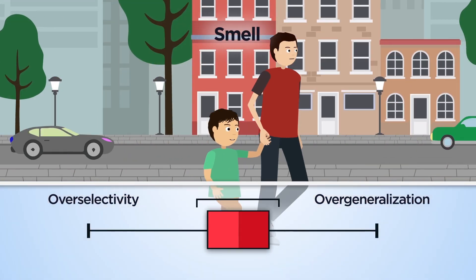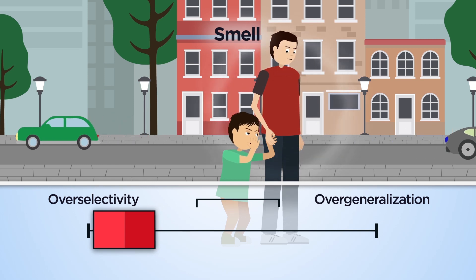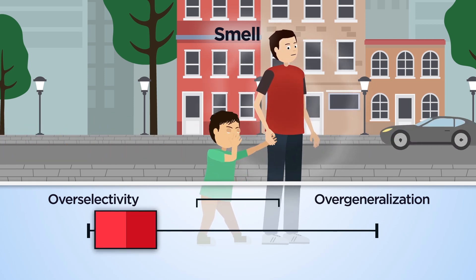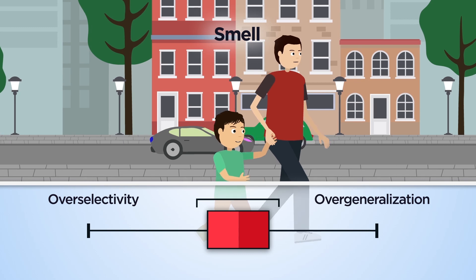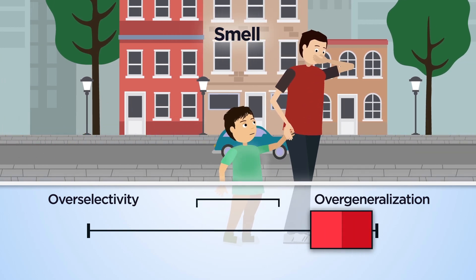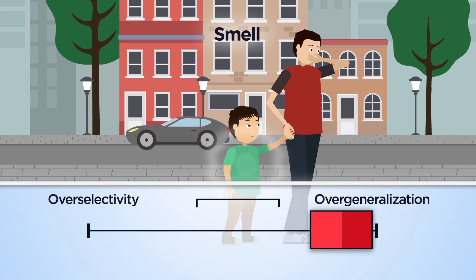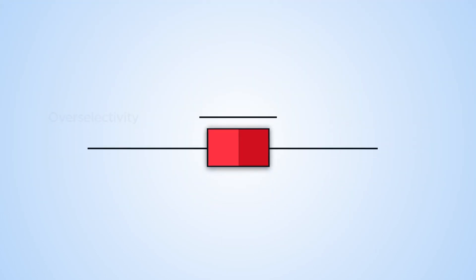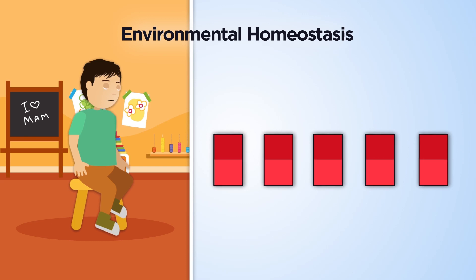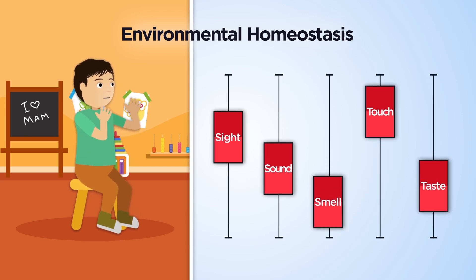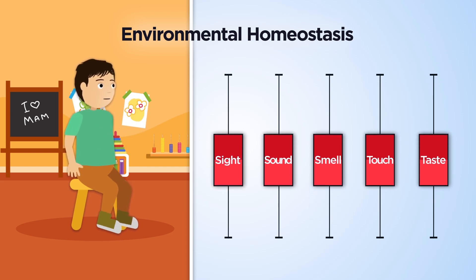Similarly, olfactory sensitivity may be heightened to the point of finding the smell of perfumes and chemicals repugnant, or may be weakened to the point of prohibiting one from smelling their own body odour. Moreover, autistic stimulus control may occur simultaneously across multiple exteroceptors, further weakening environmental homeostasis.